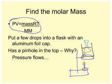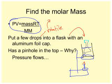Put a few drops of a volatile liquid into the flask. Volatile means it easily turns into a gas — from the French word 'voler,' which means to fly. It doesn't mean it burns; it means it turns into a gas quickly. An aluminum foil cap with a pinhole on top is placed over the flask.